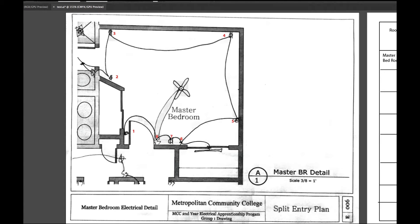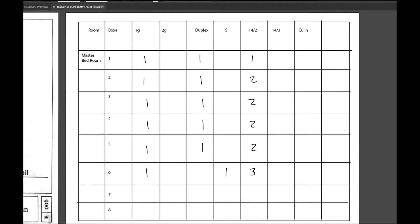I look at box seven, and it's one gang, a duplex, and two 14.2s.